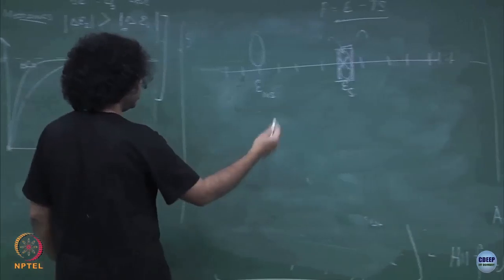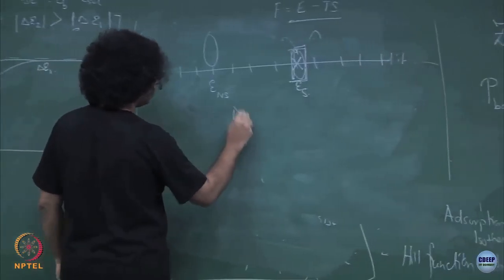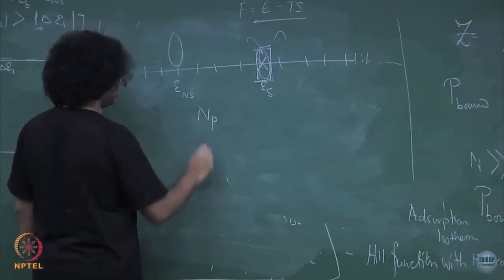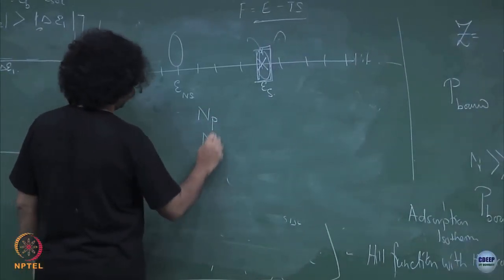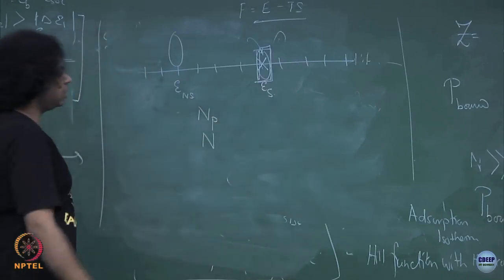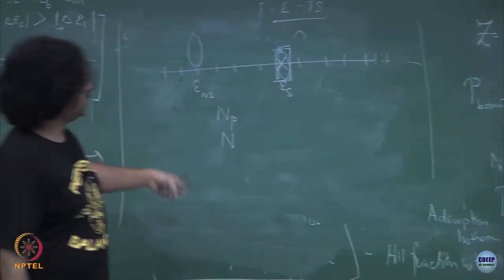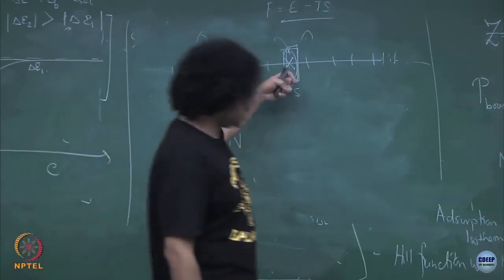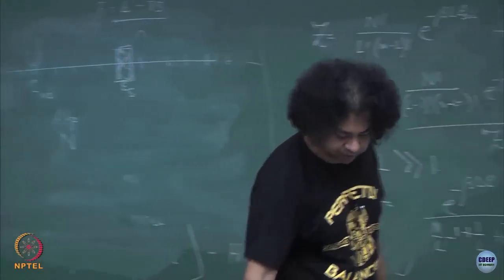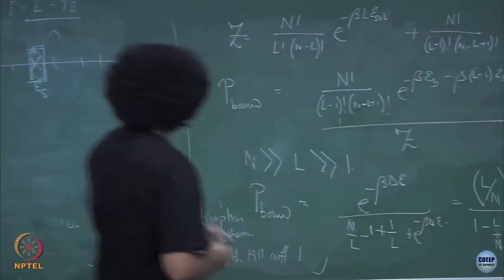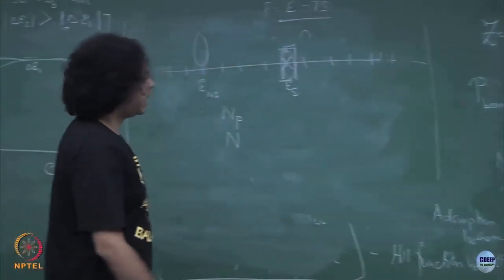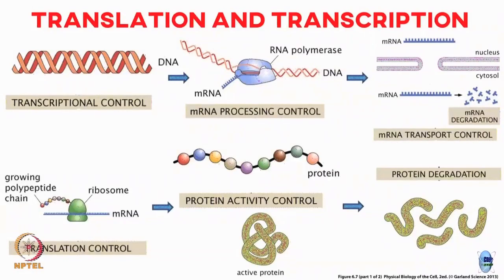Again, if you do the same analysis where you have N_p number of polymerases and N number of available sites and so on, you can calculate what is the probability that an RNA polymerase is going to be bound specifically to this site, and that is again going to look very similar to whatever expression we had.